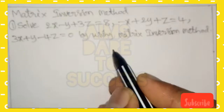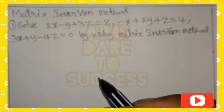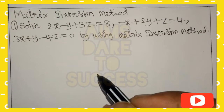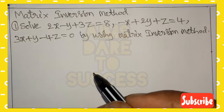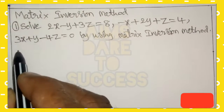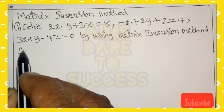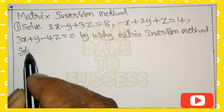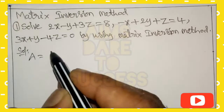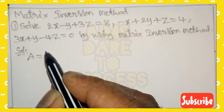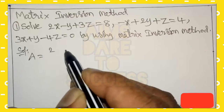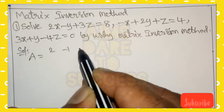Very important previous question — a VIP question. Solve: 2x minus y plus 3z equals 8, minus x plus 2y plus z equals 4, and 3x plus y minus 4z equals 0, by using the matrix inversion method.